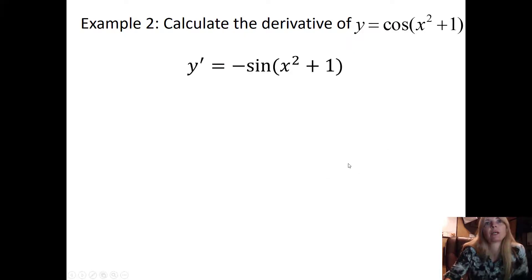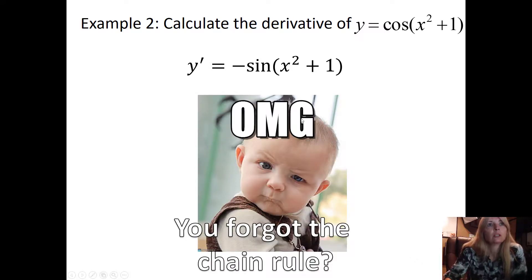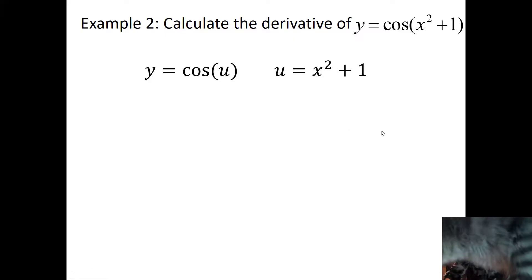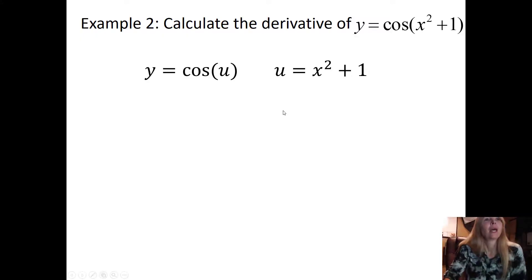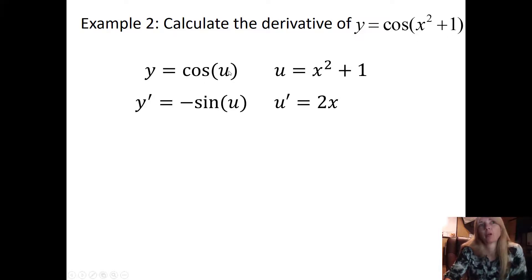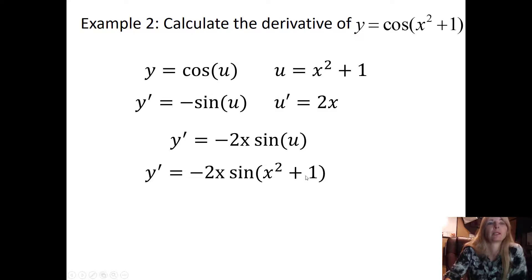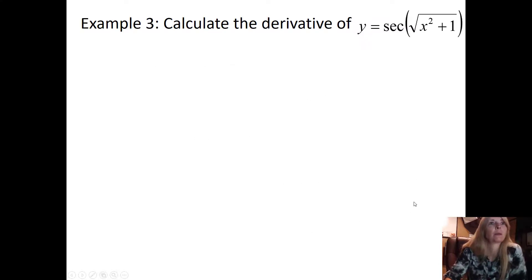Find the derivative of cos(x² + 1). You might think it's just negative sine — but wait, there are two functions here: a cosine on the outside and a quadratic on the inside. We need the chain rule. Let u = x² + 1; the derivative of cos(u) is negative sin(u), then multiply by the derivative of the inside, which is 2x. So the answer is −sin(x² + 1) · 2x. Don't forget to substitute back!